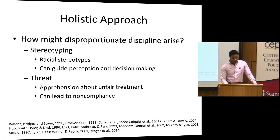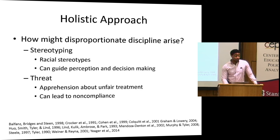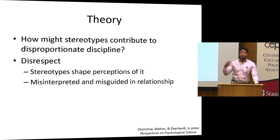There's also research on threat, which shows that if a student feels like they might be the victim of bias, this may lead them to disengage from that context. As it pertains to misbehavior, this might lead them to be less cooperative and therefore lead to more discipline problems. I hypothesize that both of these processes are leading to the effects we're finding, and that it happens through how both parties think about respect — teachers come to feel that black children are more disrespectful, and black and Latino children come to feel that teachers are more disrespectful because of the stereotypes in the air.